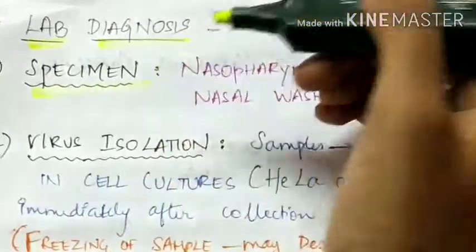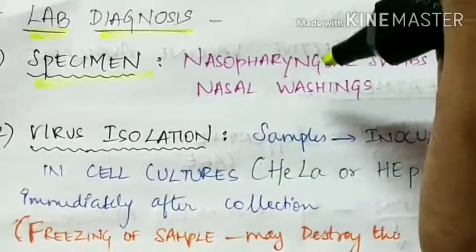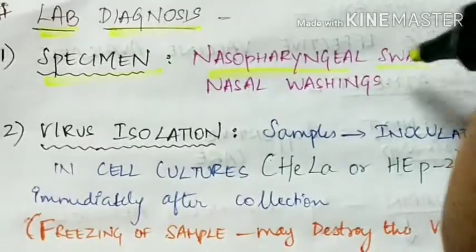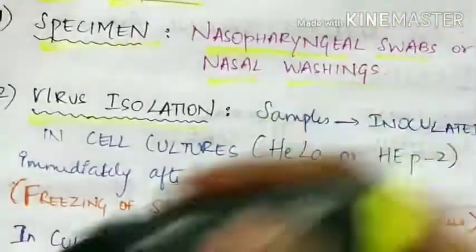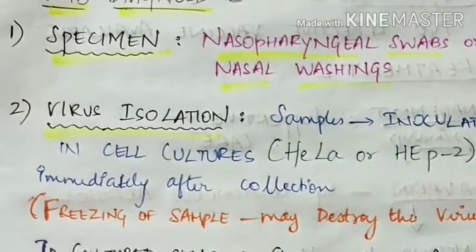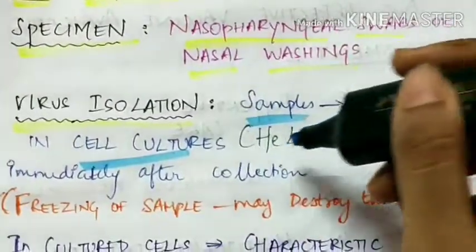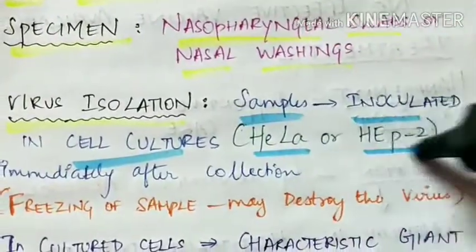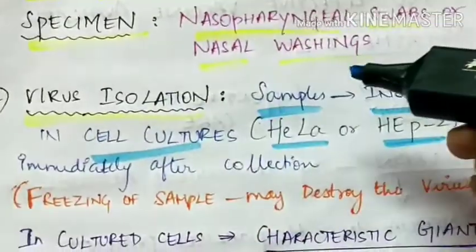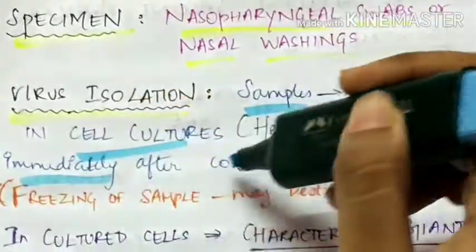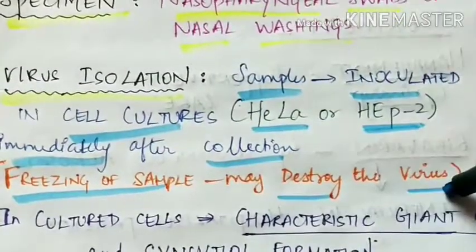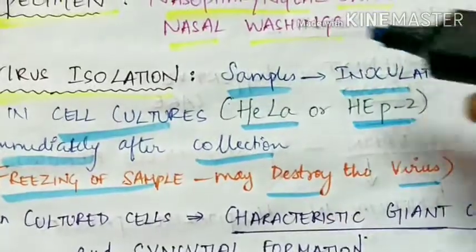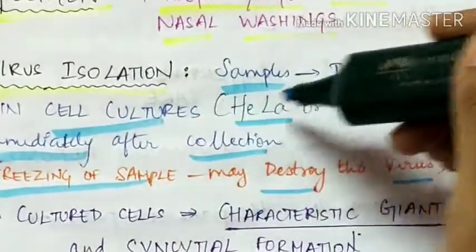Lab diagnosis — first is collection of specimen: specimens collected include nasopharyngeal swabs or nasal washings. Second is virus isolation: samples are inoculated in cell cultures, most commonly HeLa or HEp-2 cell lines. The inoculation is performed immediately after collection because freezing the sample may destroy the virus. Fresh samples are inoculated in cell cultures immediately.